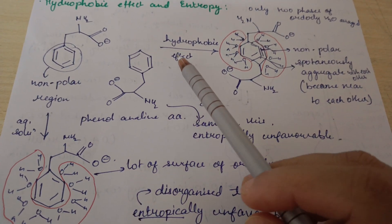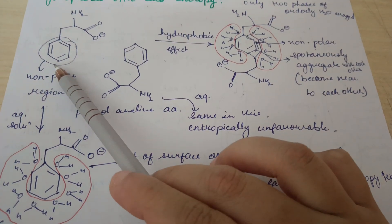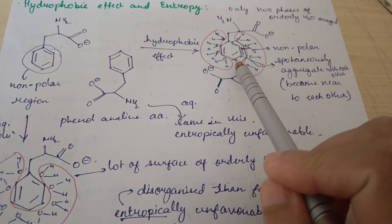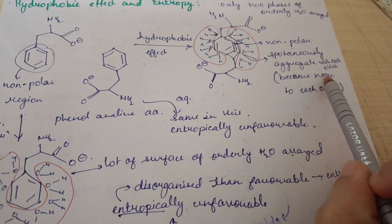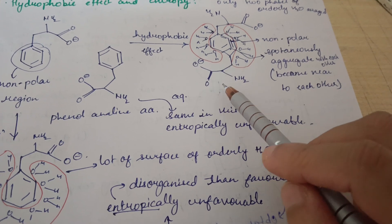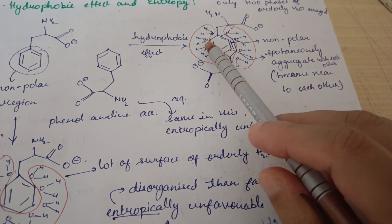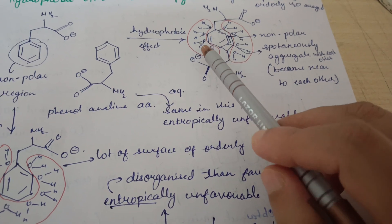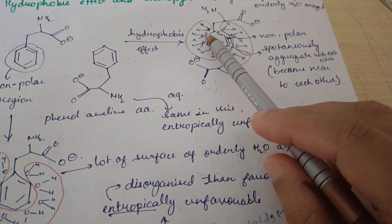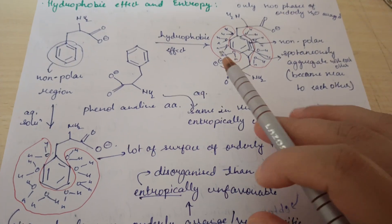When the hydrophobic effect comes into existence, the non-polar end of one phenylalanine and the non-polar end of the other phenylalanine come close to each other. This non-polar end spontaneously aggregates with the other. In aqueous conditions — that is, in water — the water molecules start aligning and organizing themselves to form maximum hydrogen bonding, arranging themselves around the phenylalanine molecules.